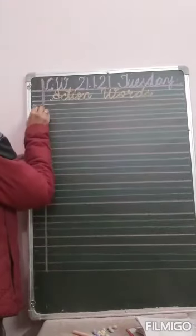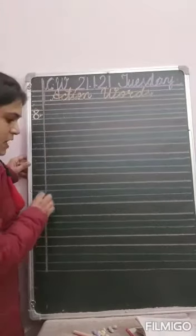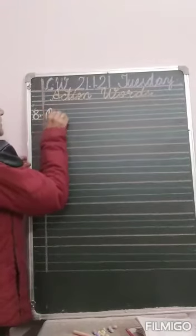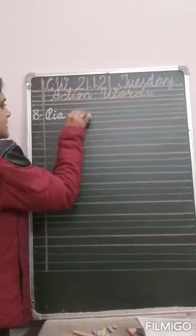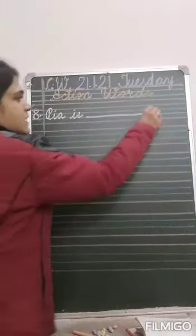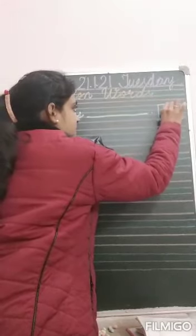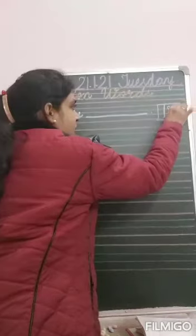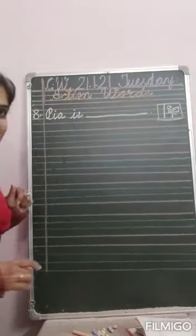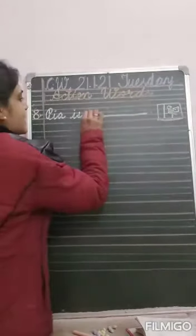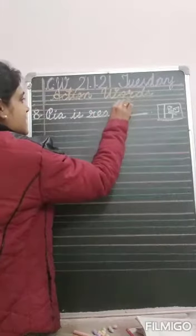Now number eight. Pia is dash. See the action. Pia is sitting on the chair and in her hand there is a book. So Pia is reading. Write down reading. R-E-A-D-I-N-G. Pia is reading.